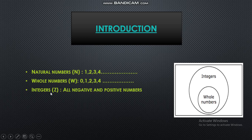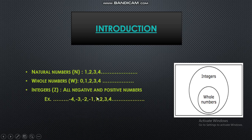Now we are going to study a new set of numbers: integers. Integers is a set of all negative and positive numbers. Natural numbers and whole numbers are positive integers because they don't have a minus sign in front of them. But if we put a minus sign in front of all these digits, we get negative numbers. So for example, minus 4, minus 3, minus 2, minus 1, and 1, 2, 3, 4 — these all are integers.